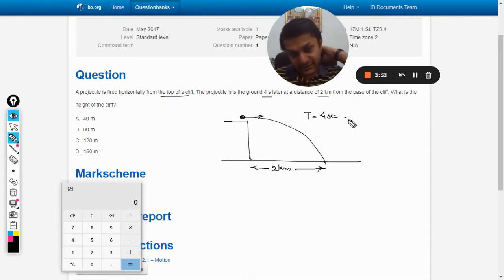The time taken is four seconds. We know that the formula for the time period is always root of 2h by g. The range is not actually required in this question.